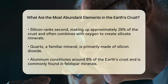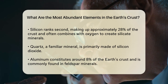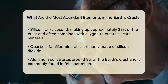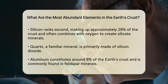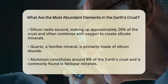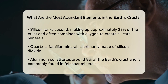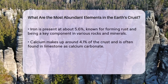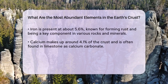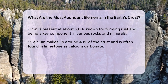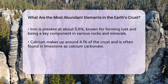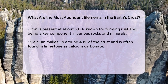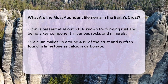Iron comes in next, comprising about 5.6% of the Earth's crust. Iron is known for its role in forming rust, which is an oxide of iron, and it's also a key component in many types of rocks and minerals.